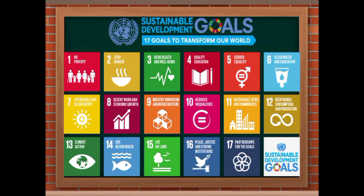Eight, decent work and economic growth. Ninth, industry, innovation, and infrastructure. Ten, reduce inequalities. Eleven, sustainable cities and communities. Twelve, responsible consumption and production. Thirteen, climate action. Fourteen, life below water. Fifteen, life on land. Sixteen, peace, justice, and strong institutions. And number seventeen, partnerships for the goals.